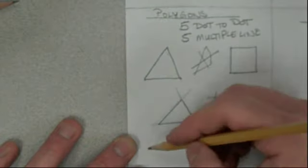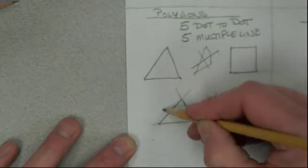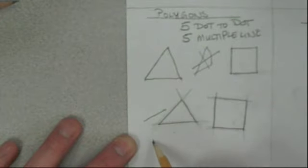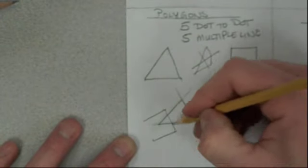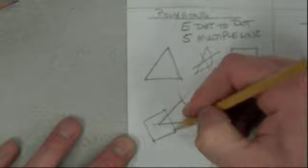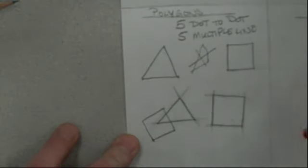They can also cross one another if they need to. So if I needed to do a square over here, that's fine. Some people like to turn them into a shape, such as a house or something along that line. So five dot-to-dot, five multiple lines.